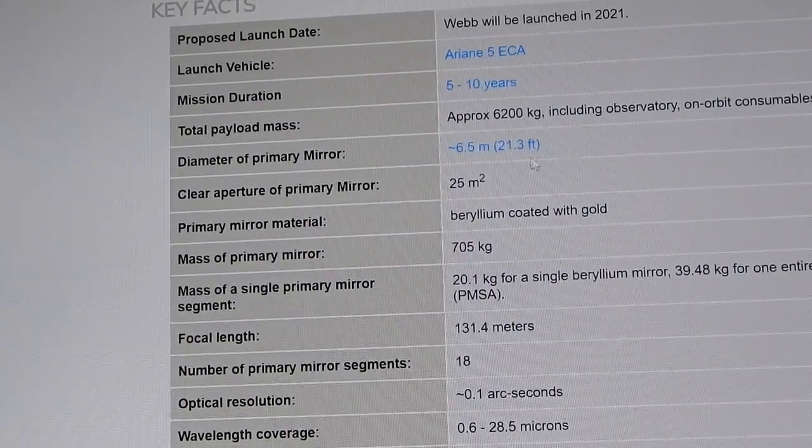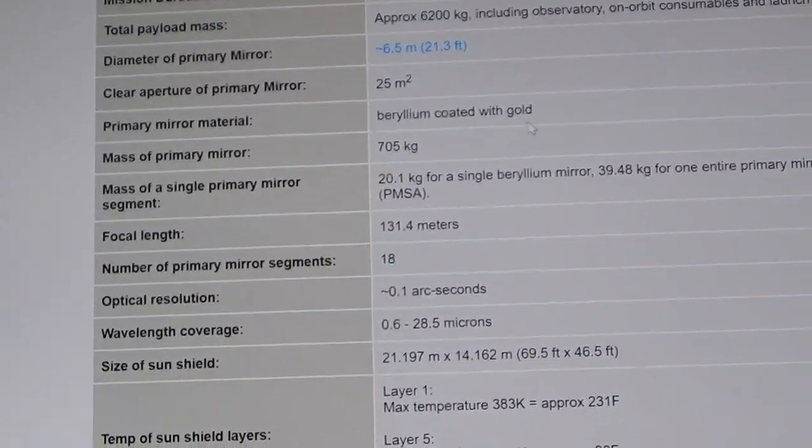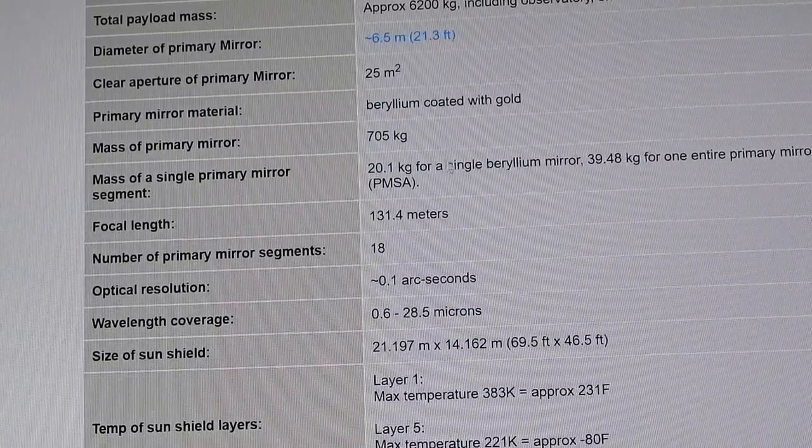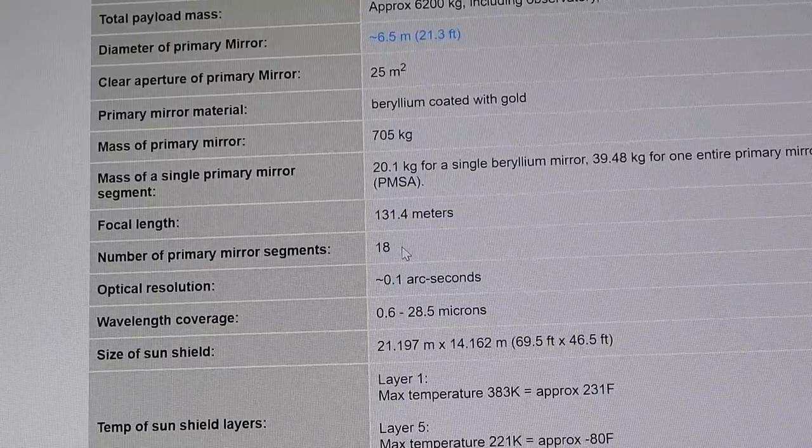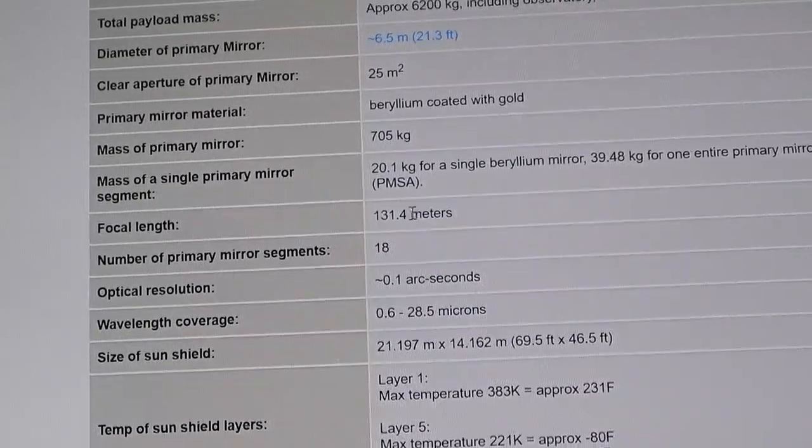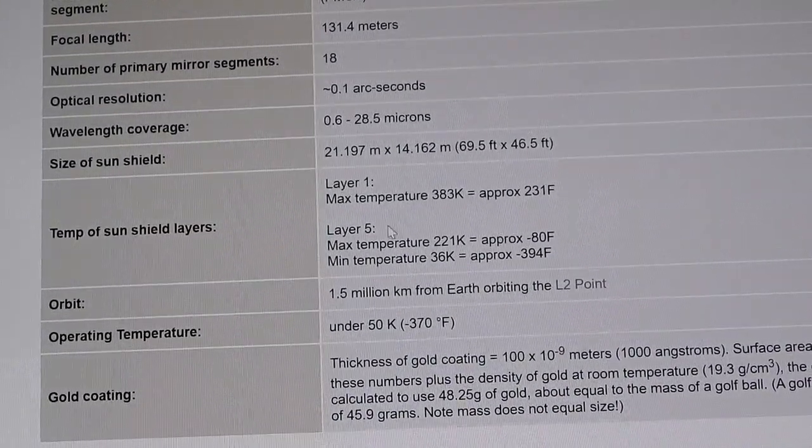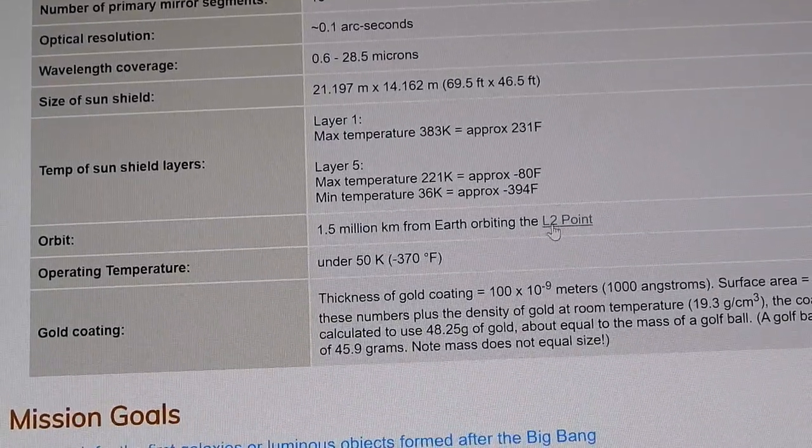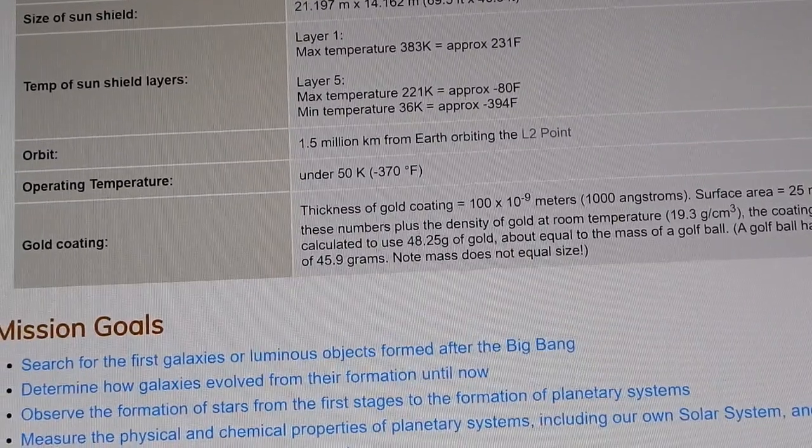Primary mirror, 21.3 feet, 6.5 meters, beryllium coated with gold. There's about 0.1 ounces of gold per panel. There's 18 segments. Again, it's made this way so it can be folded into a small piece. We'll look at that and see how it's folded. Some layers, the insulation layers talks about the temperature that gives you orbit, 1.5 million kilometers from Earth, as we mentioned at the L2 point.